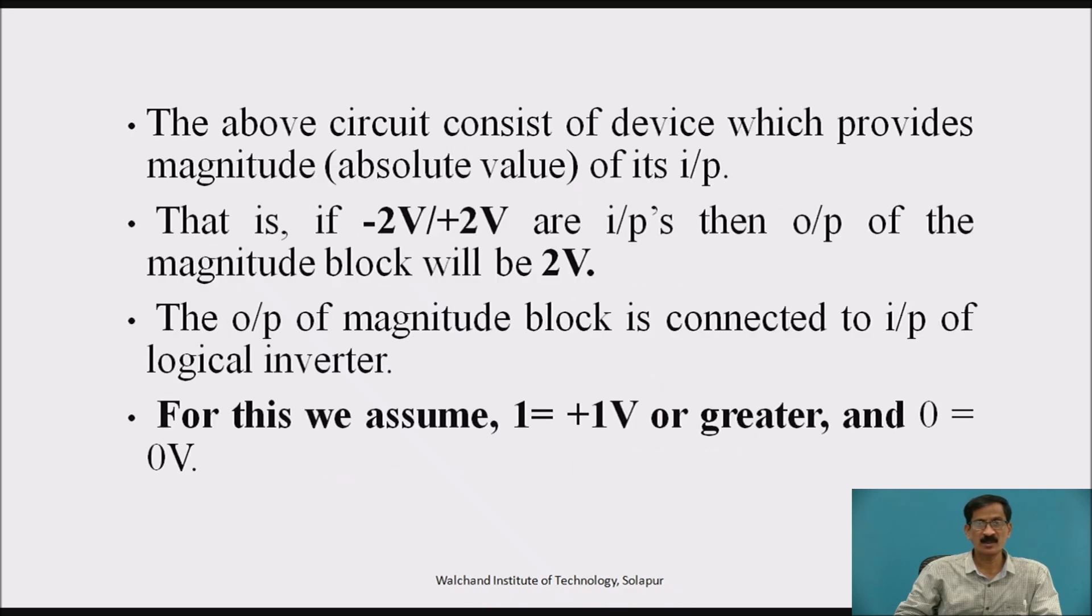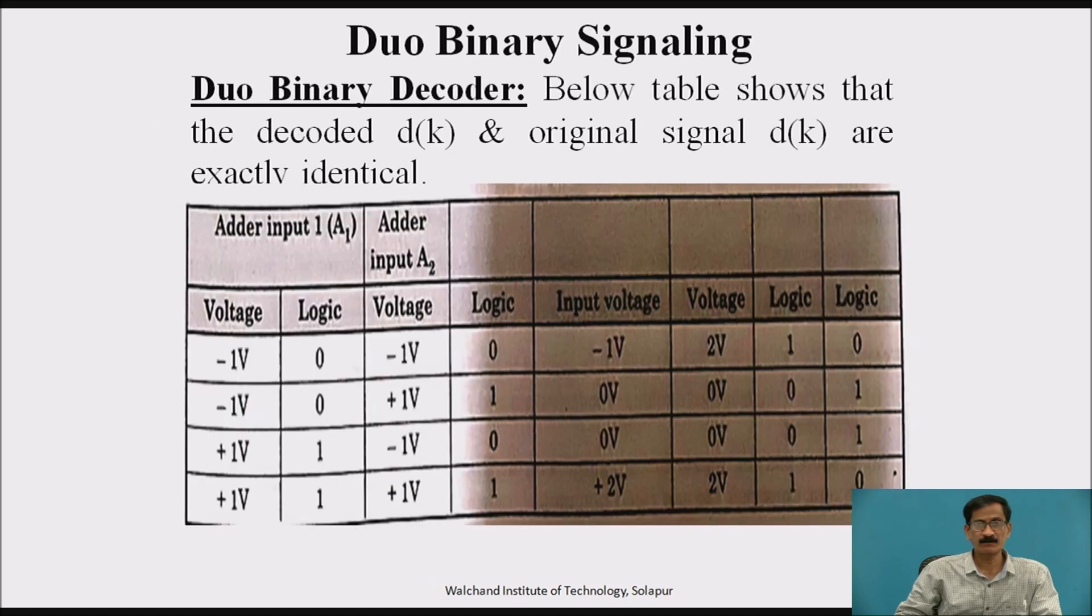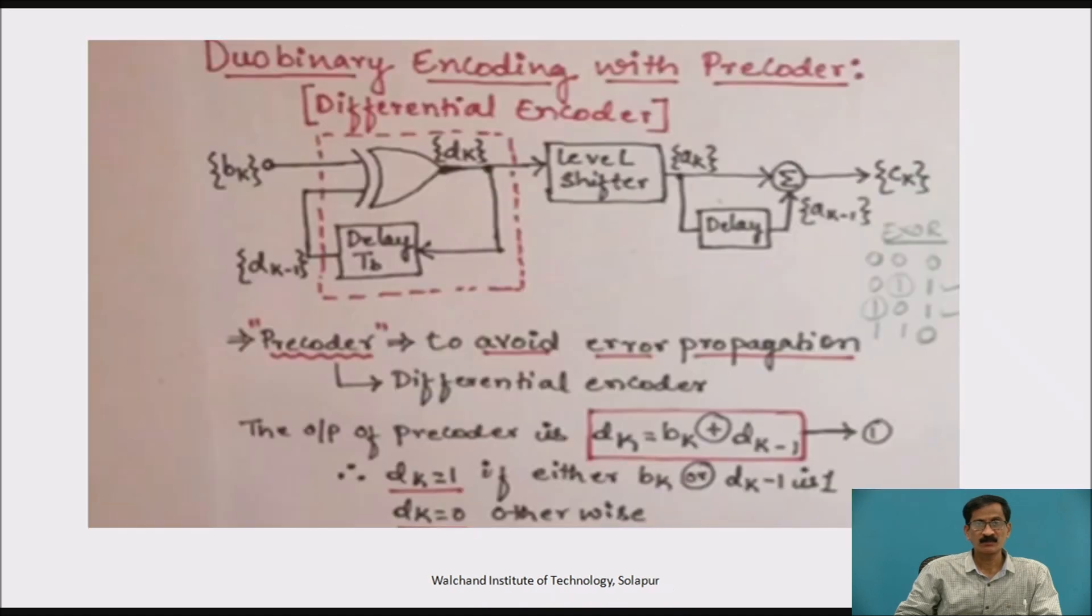The above circuit consists of device which provides magnitude, that is the absolute value of v d k. That is, if minus 2 or plus 2 are input then output of the magnitude block will be 2 volt and it is given to the logical inverter. For this, we will discuss this diagram, this duobinary decoder.